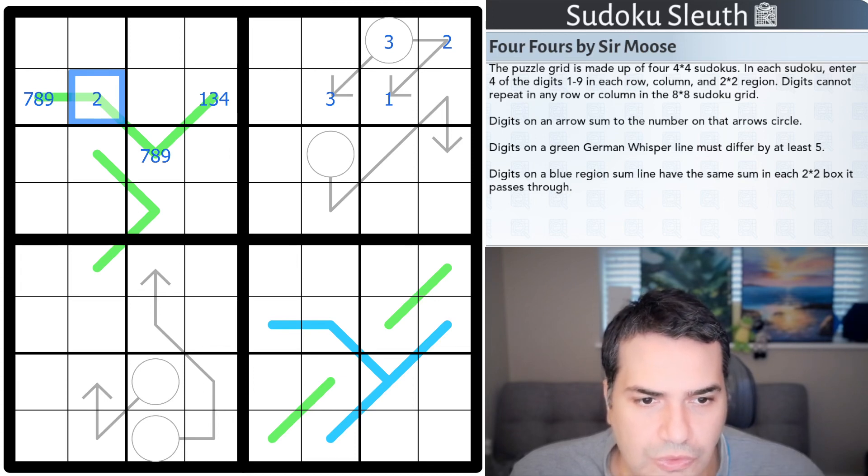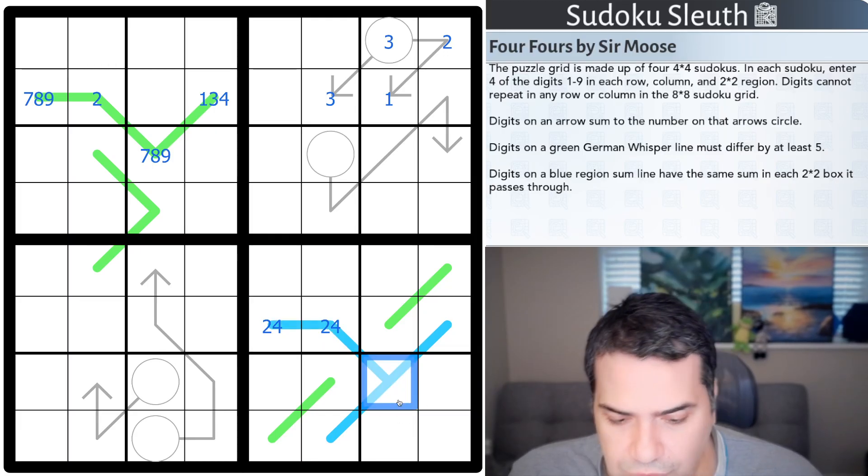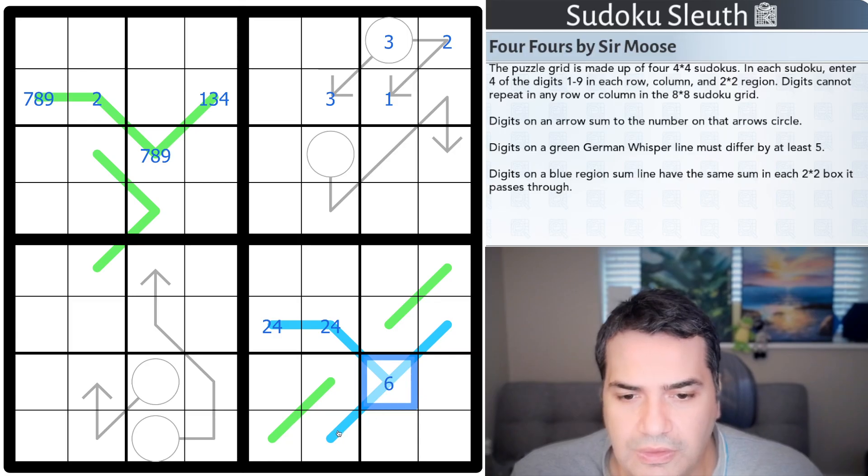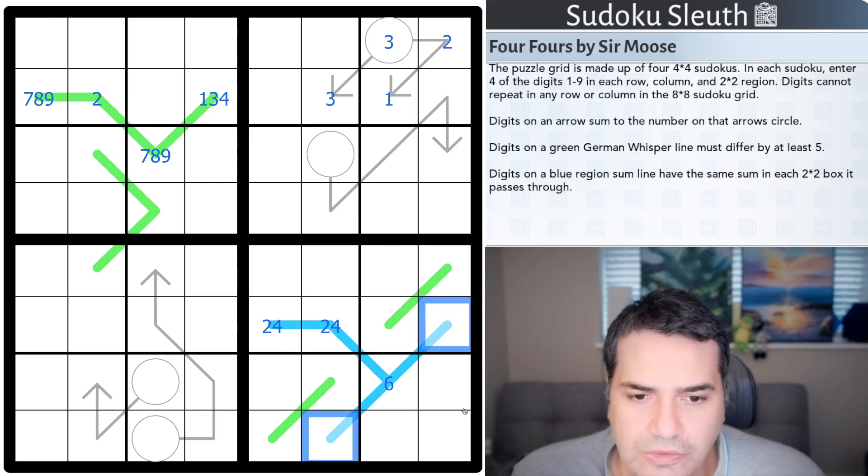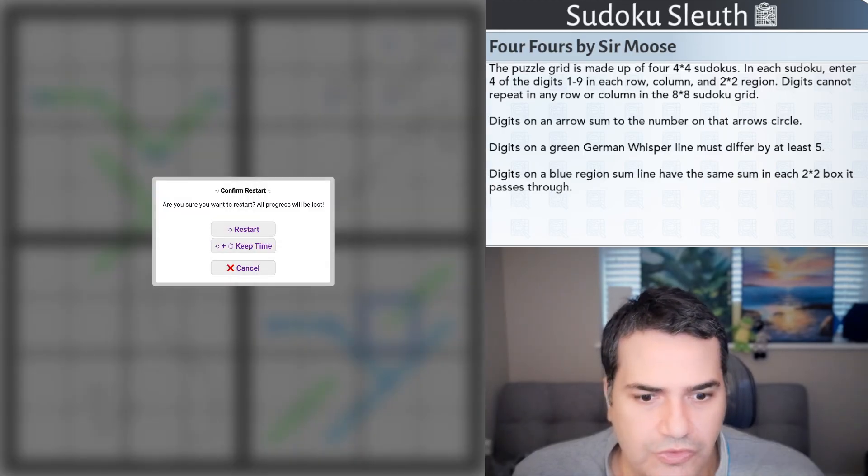Last but not least, digits on a blue region sum line have the same sum in each 2x2 box it passes through. So, if you look at this region sum line, what that's saying is that these two cells, let's say it's 2 and 4, come up to a sum. And, therefore, this cell, which is on its own in this box, has to equal that. And no guesses needed to really confirm what these two would be. So, that's all the rules we have for today. So, if you want to do magical math with Sudoku Sleuth, link is always in the description down below for you to join. And with that said, I'm going to restart the clock and see how I get on.